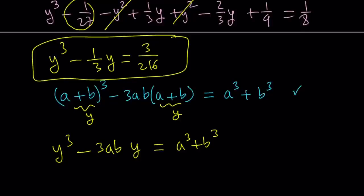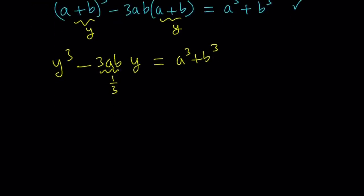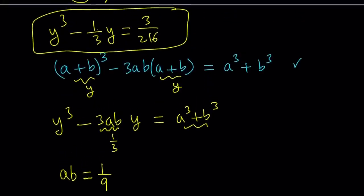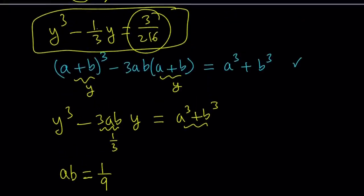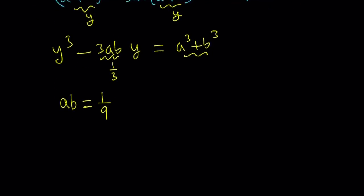This is going to turn into y cubed minus 3ab times y equals a cubed plus b cubed. Now notice that we have a y cubed here, coefficient is 1. We have a y here, the coefficient is negative 3ab, and here it's negative 1 third. So if you set the coefficients equal, 3ab should be equal to 1 third, which means ab is 1 ninth. And a cubed plus b cubed should equal our constant term, which is 3 over 216.